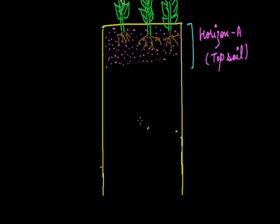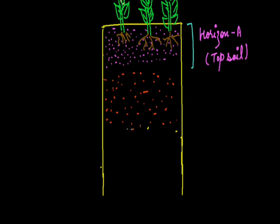The next region is called Horizon B. Horizon B also contains particles of soil and is called subsoil.